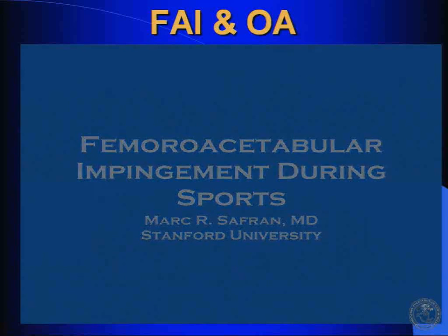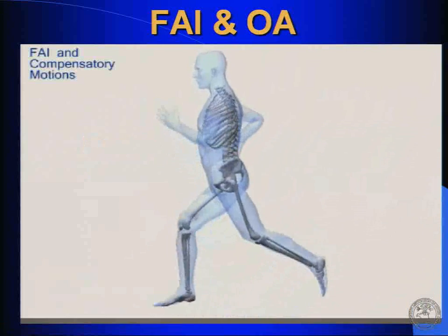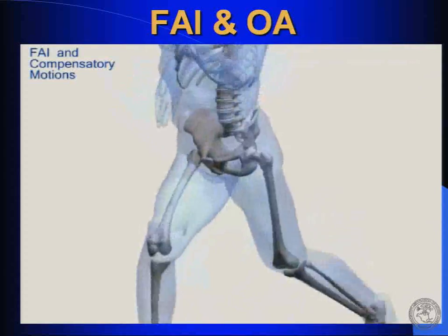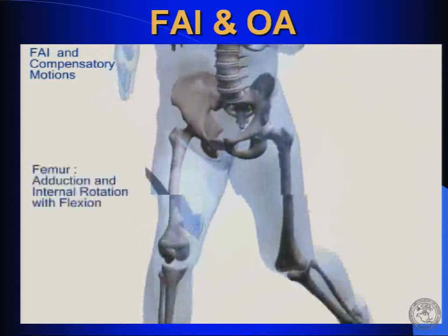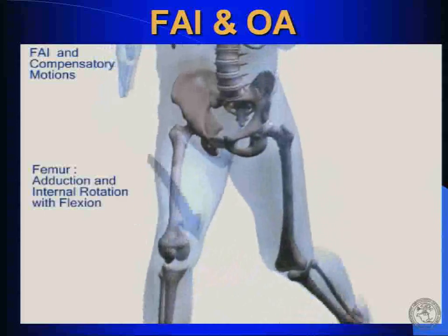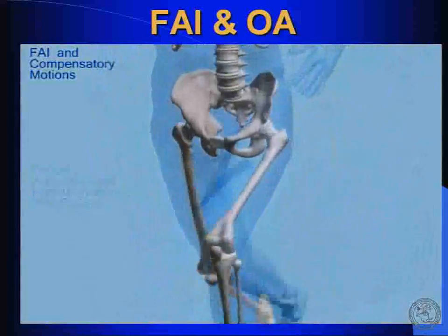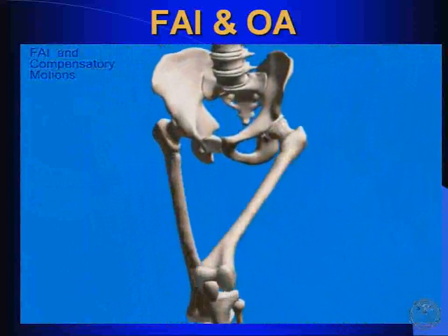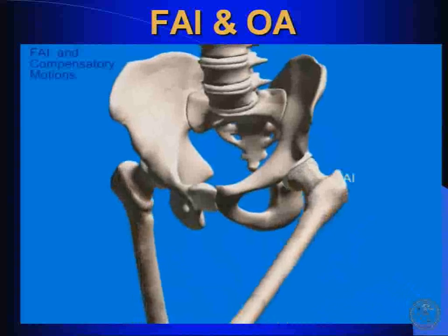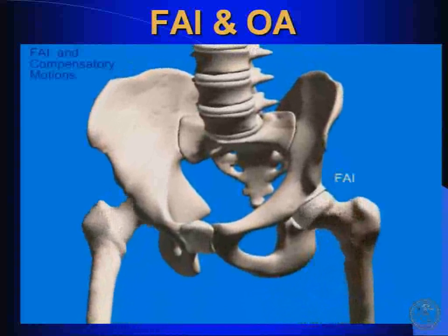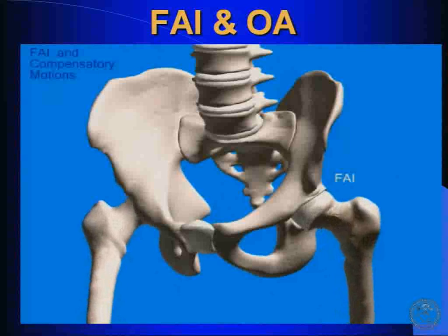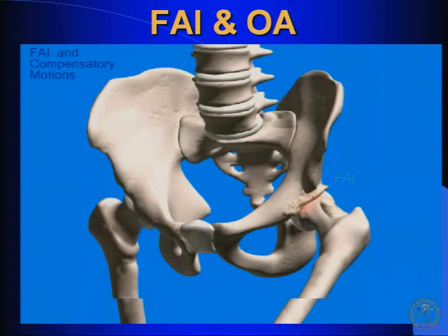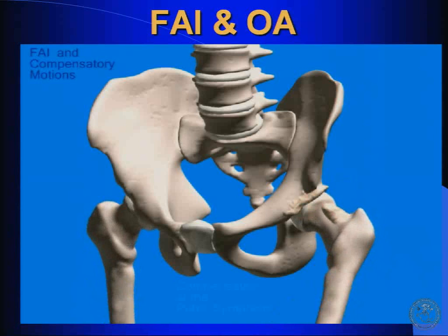In sporting activities, we know the impingement position involves flexion, adduction, and internal rotation. If you run, you're flexing the hip, adducting and internally rotating in the swing phase, which can lead to impingement — which is why we see this in running athletes or those involved in sports that require running. With good clearance you go through without problems, but when you have over-coverage of the acetabulum or loss of offset, you would impinge as you bring the hip into flexion, adduction, and internal rotation with running.